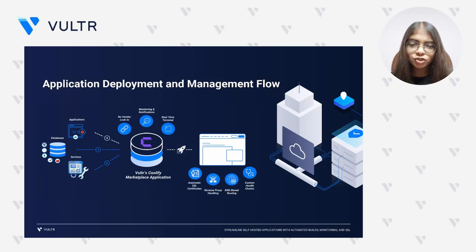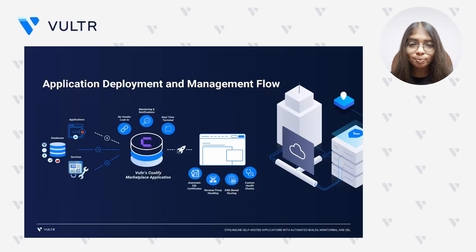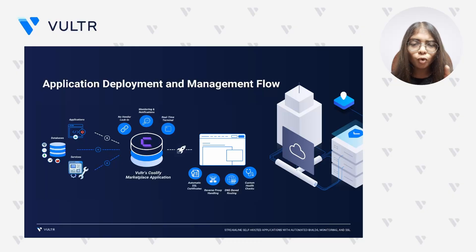Let's now look at how Coolify manages your projects on a Vultr instance. At the top of the flow, we have the core resources: applications, databases, and services. Each can be deployed as isolated containers orchestrated by Coolify. These resources are continuously monitored — you can configure health checks to ensure they run correctly. If a container stops or fails, Coolify can automatically restart it. Deployment logs are also available in the dashboard, so you can track builds, runtime errors, and configuration issues as they happen. All deployments, environment variables, and configurations remain on your instance, giving you complete control over your infrastructure.